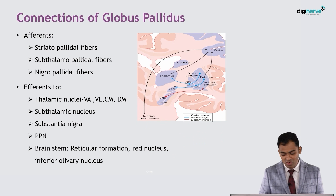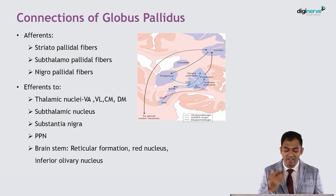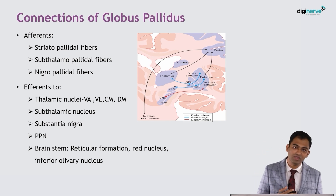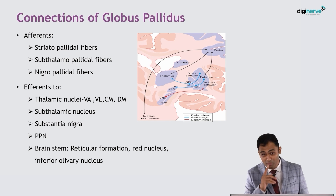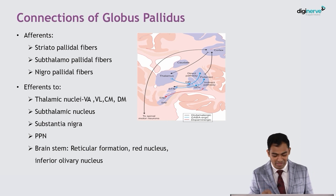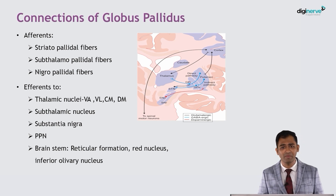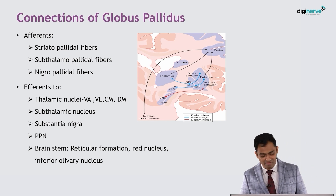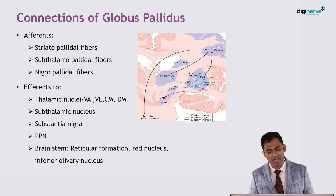Now looking at the connections of the globus pallidus: it will receive afferents from the striatum, called the striatopallidal fibers. It will also receive afferents from the subthalamus, called the subthalamopallidal fibers. An important point here — these are the only excitatory fibers which reach the globus pallidus; everything else in the internal circuits is inhibitory GABAergic. These subthalamopallidal fibers are glutamatergic. The globus pallidus will also receive afferents from the substantia nigra, called the nigropallidal fibers.